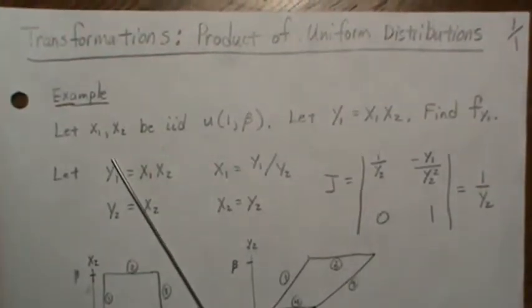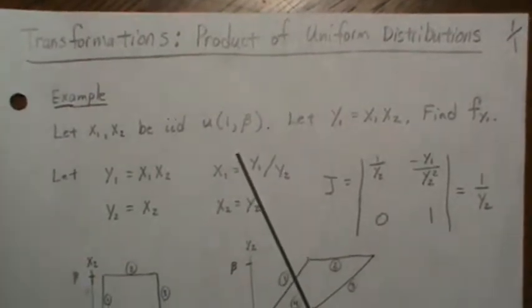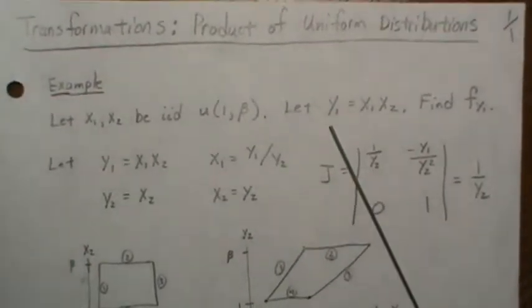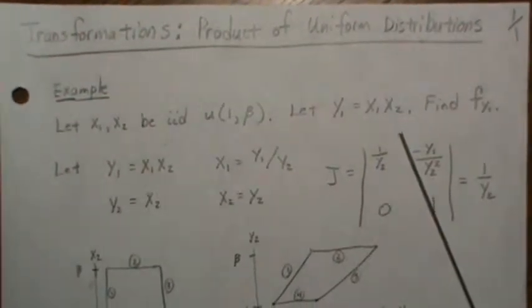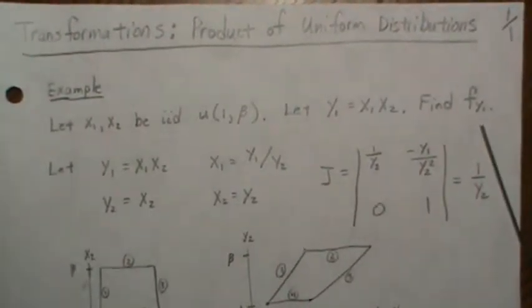So if we let x1 and x2 be uniform from 1 to beta and we let y1 equal the product of x1 and x2, we want to find f of y1.